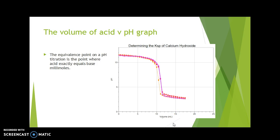The equivalence point on a pH titration is the point where the amount of acid H+ ions added exactly equals the number of base hydroxide millimoles that were present at the beginning of the titration.